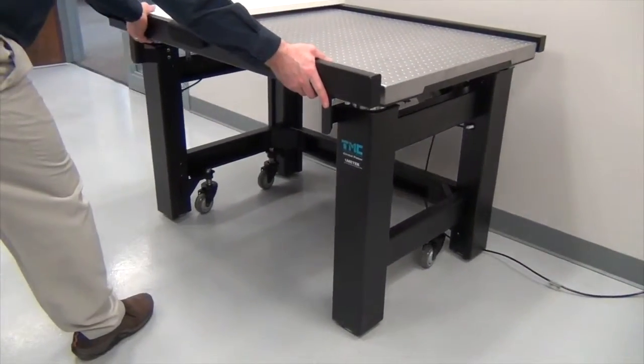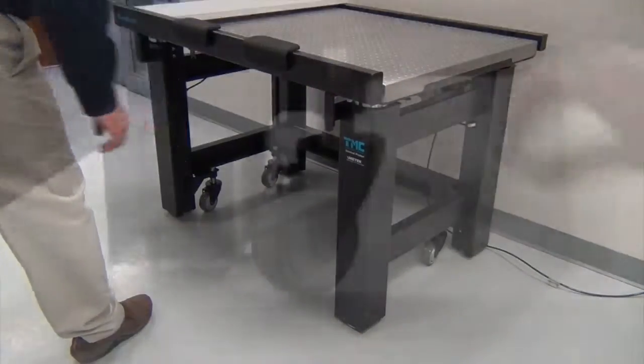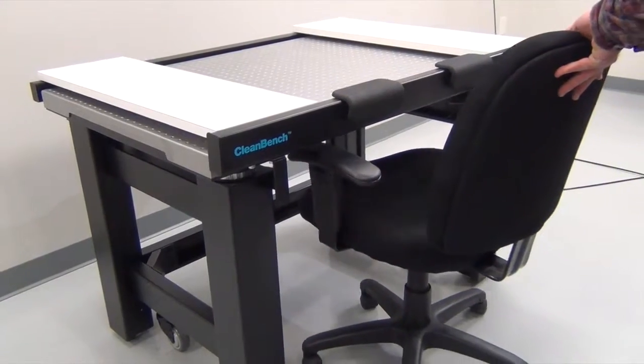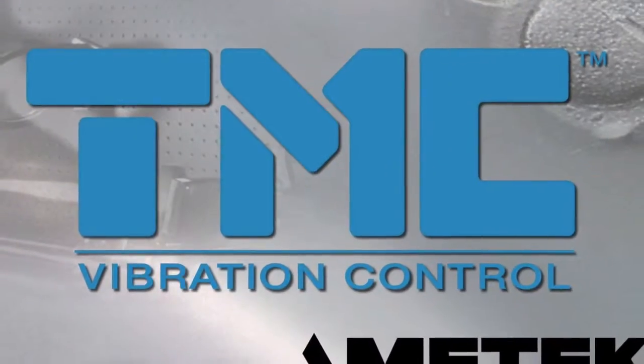To disengage the casters, loosen the adjustment bolts and unscrew until the casters are clear of the floor. This concludes this part of our clean bench setup series.